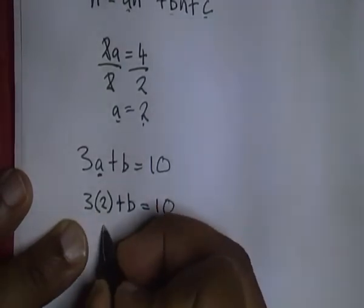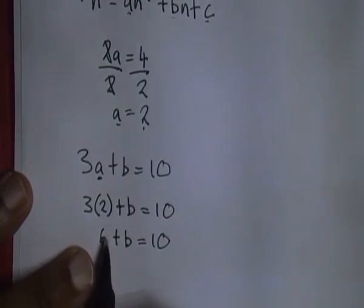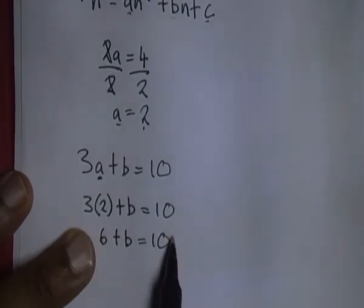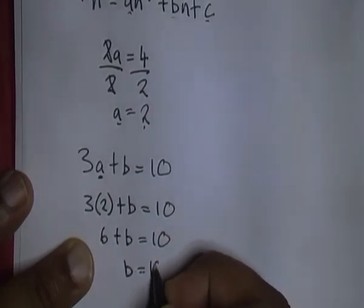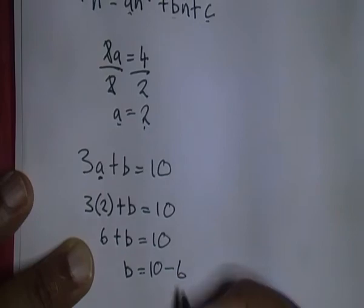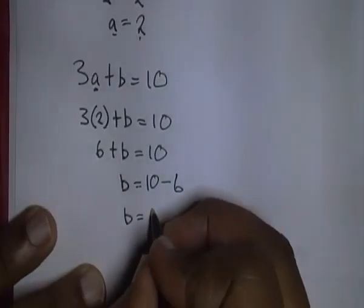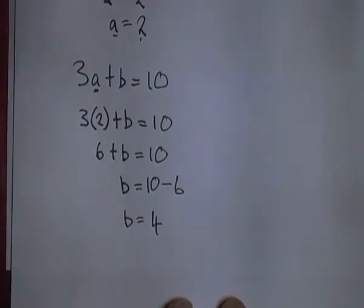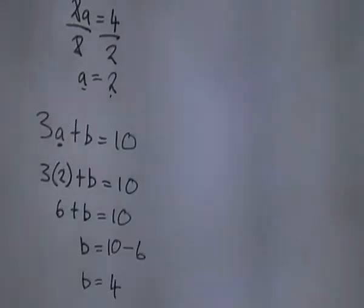3 times 2 is 6 plus B is equal to 10. When you're solving for B, the 6 we take it over and it becomes a minus. So B is equal to 10 minus 6, which means B is equal to 4. Now we know the value of A and B. We need to work out the value of C now.